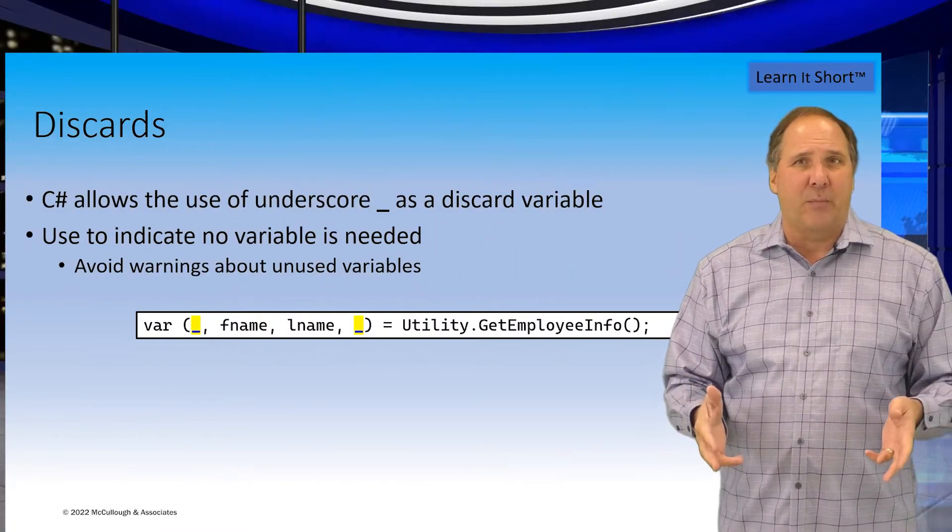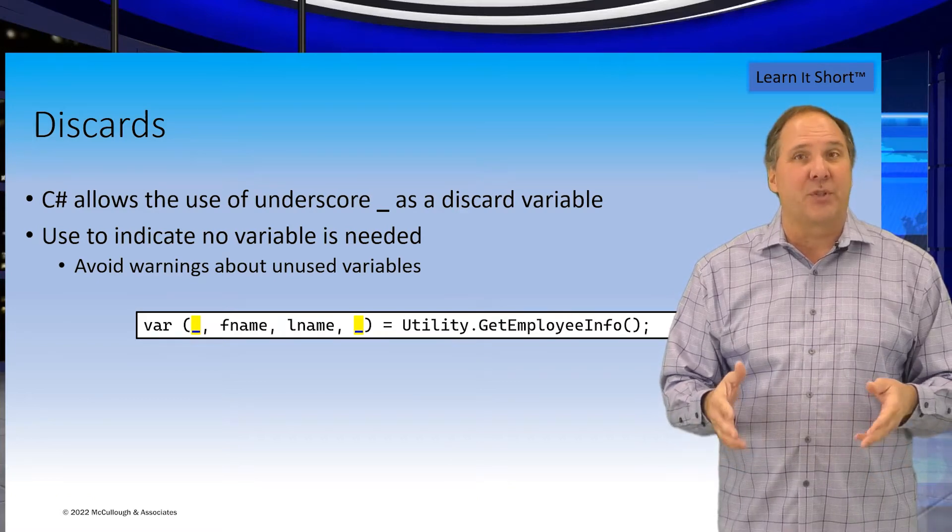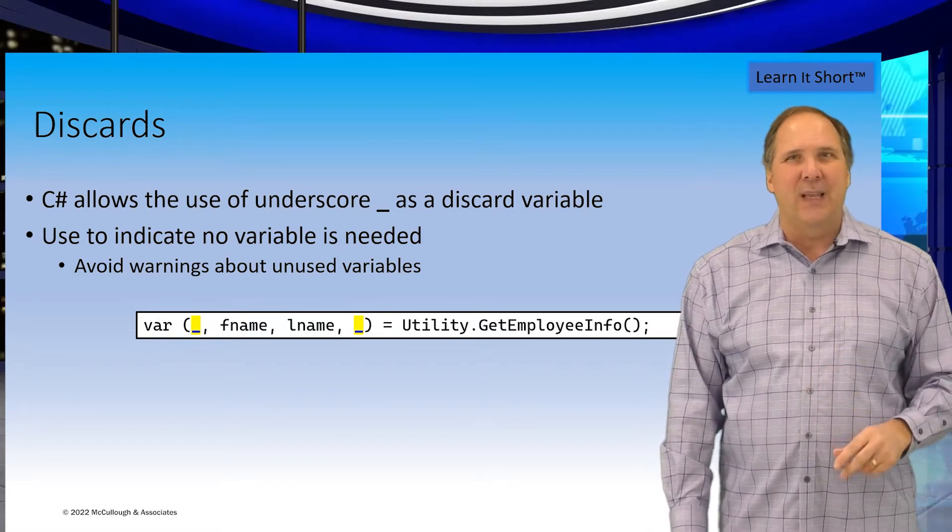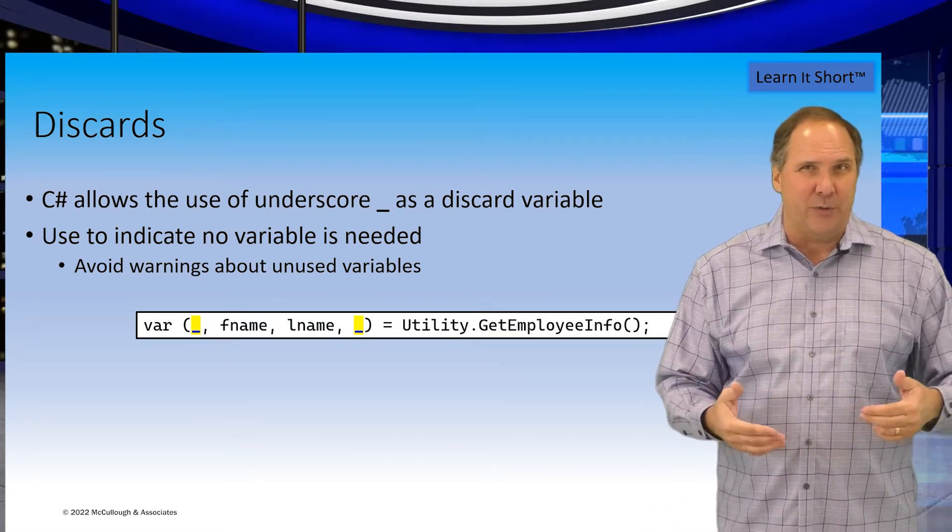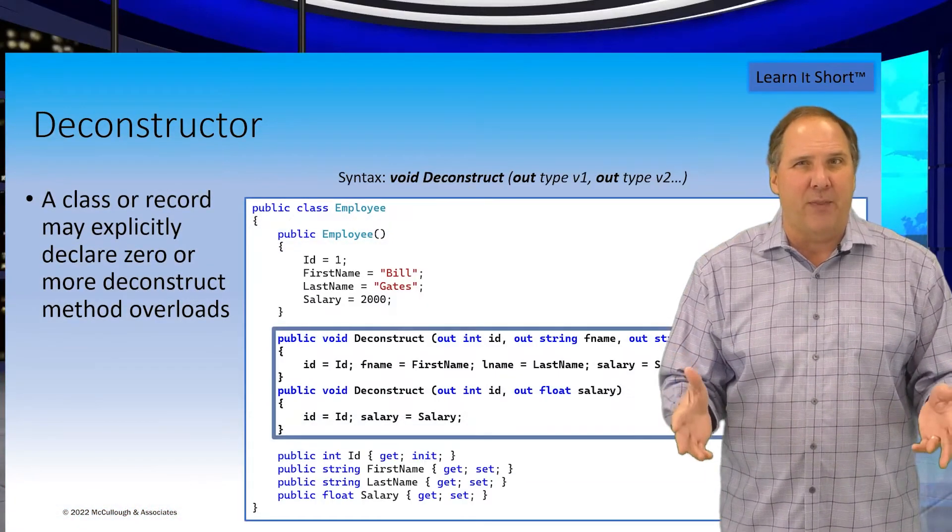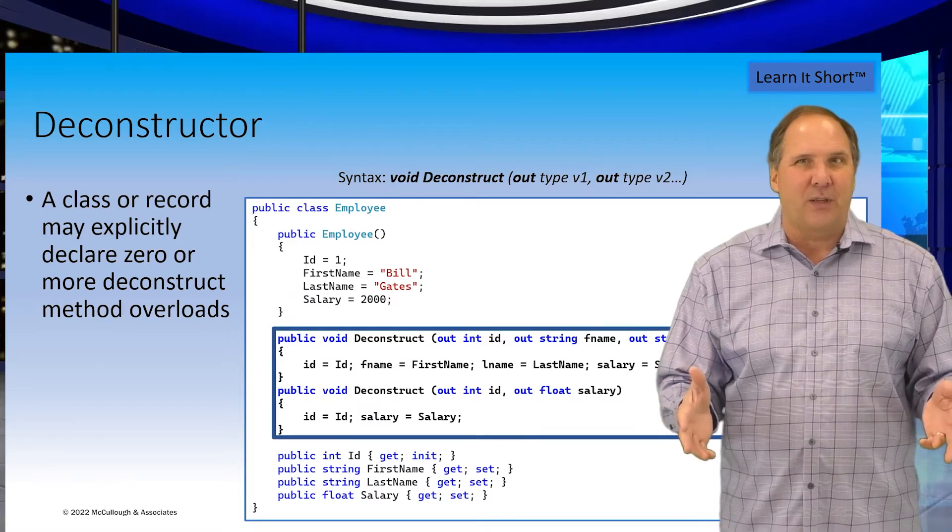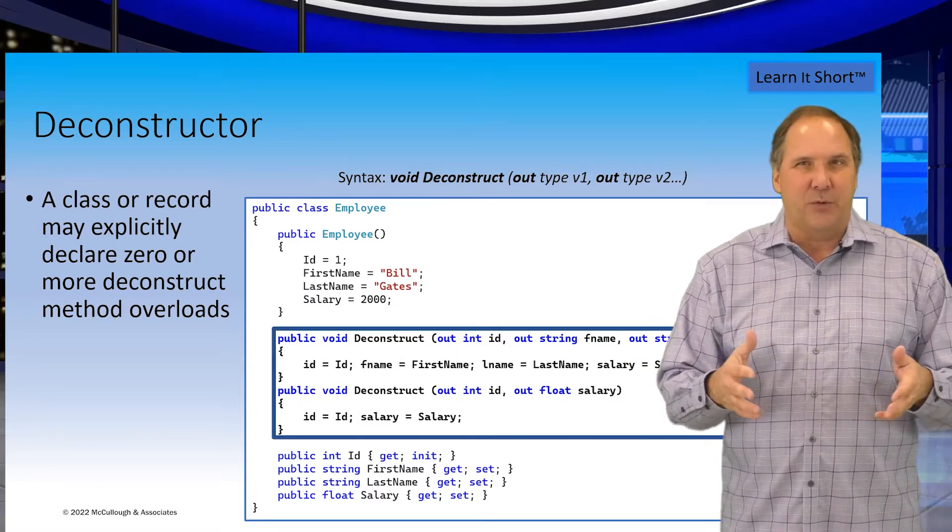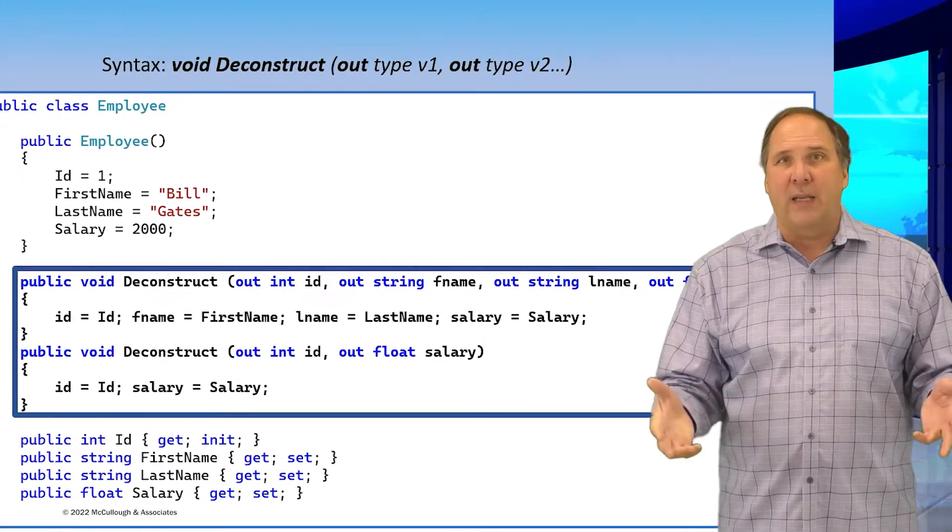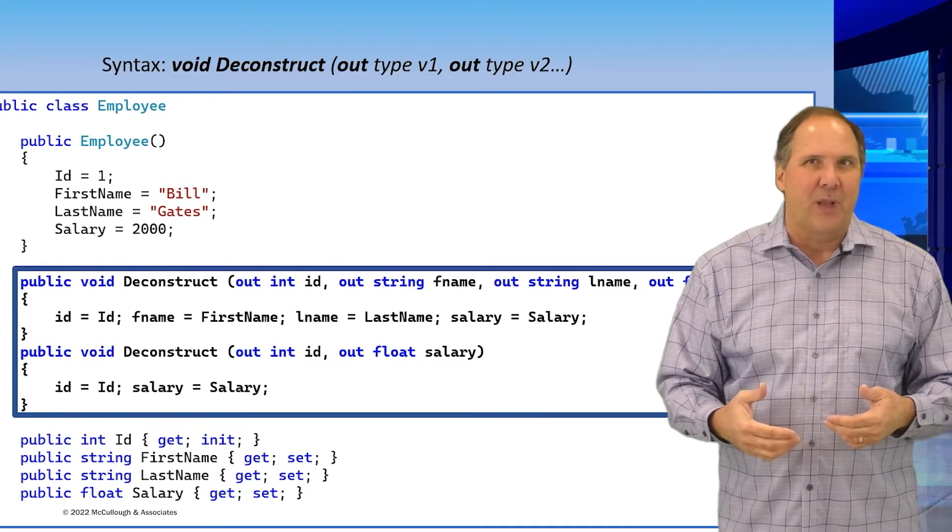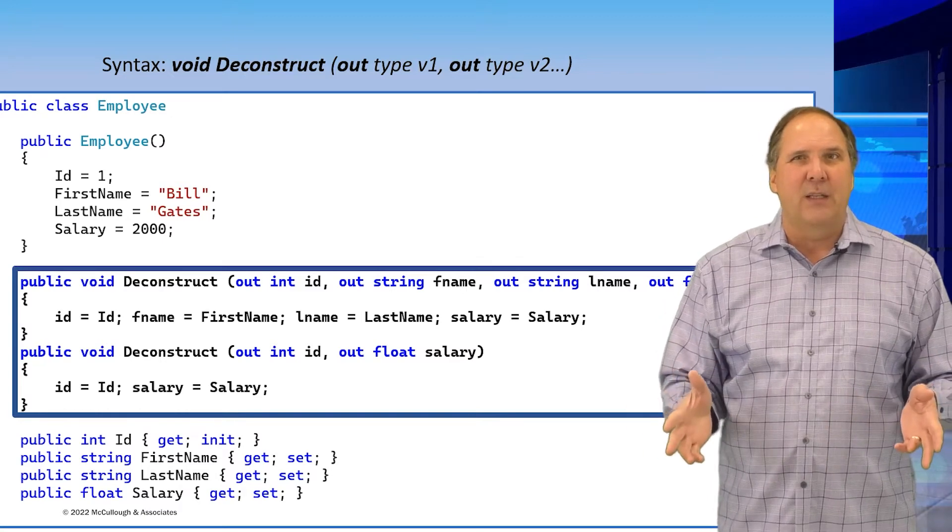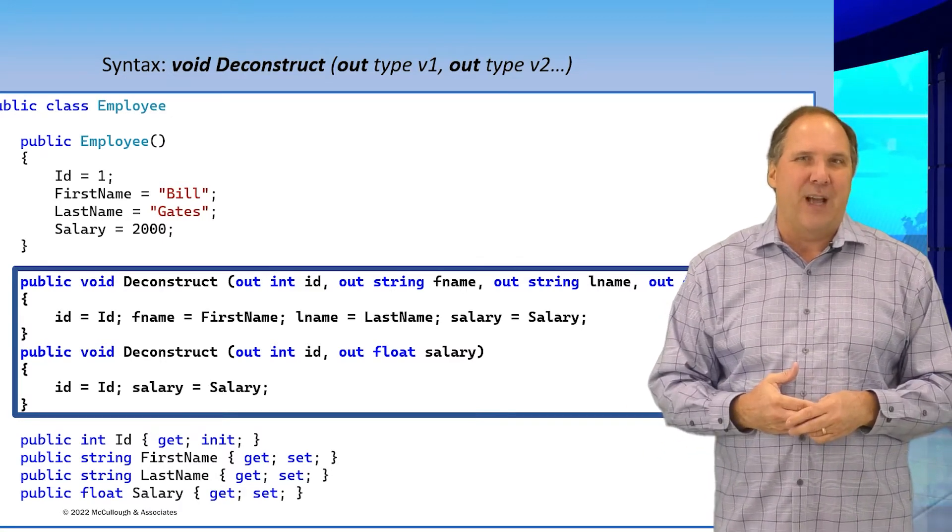C-sharp automatically provides deconstructors for tuples and positional records. It does not for classes, but we can declare destructors in our classes if we wish. The syntax is to simply declare a void method named deconstruct with a list of out variables that you wish to be able to unpack. You can define several varieties of this method as overloads. As you can see in this example in the employee class, we define two deconstruct methods with different out variables.